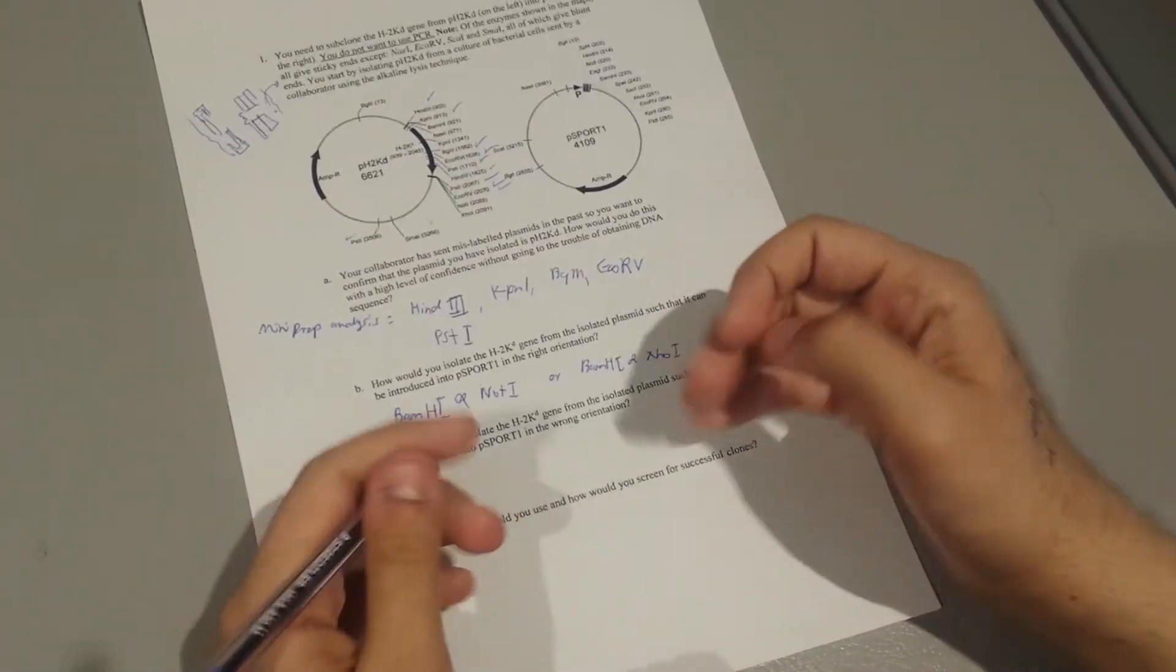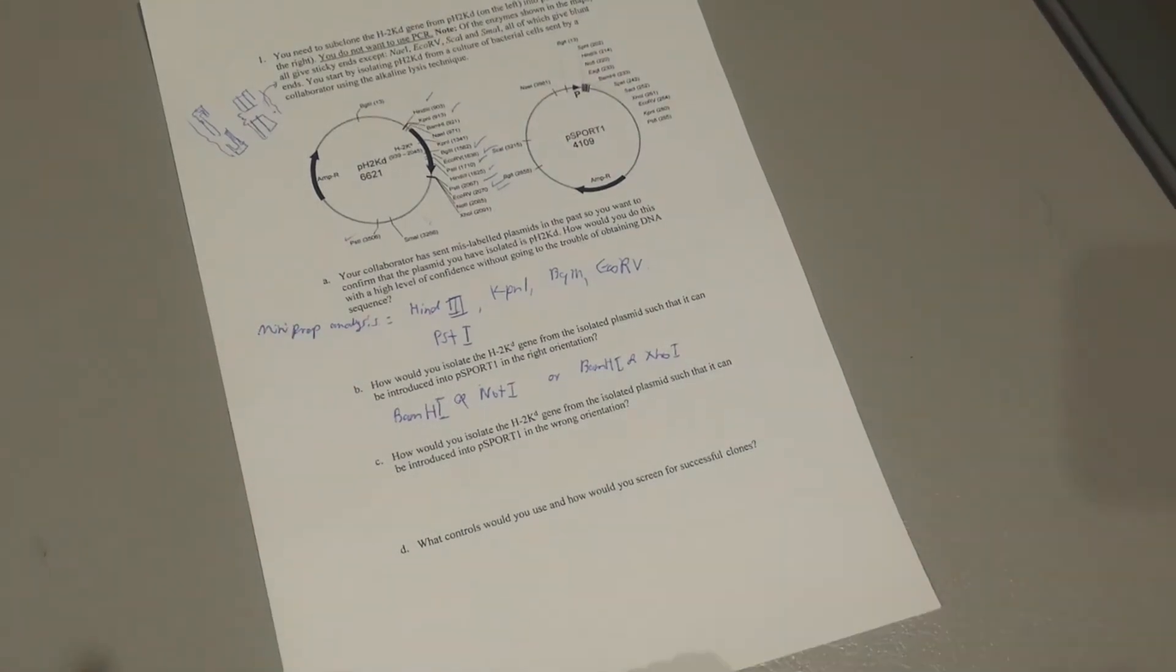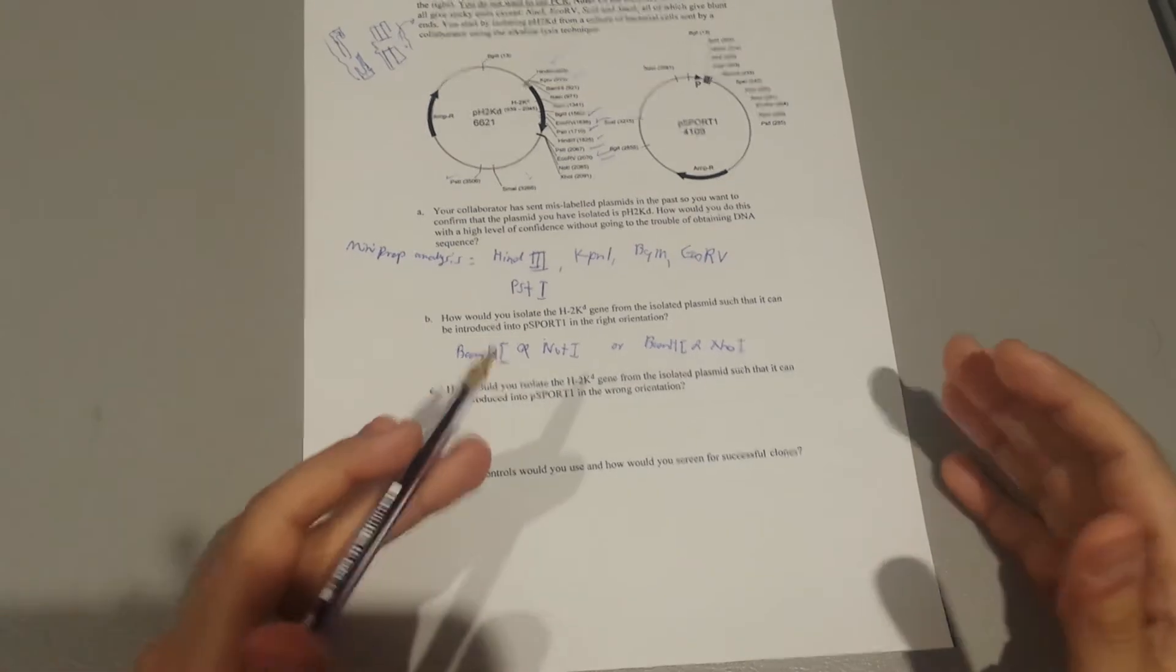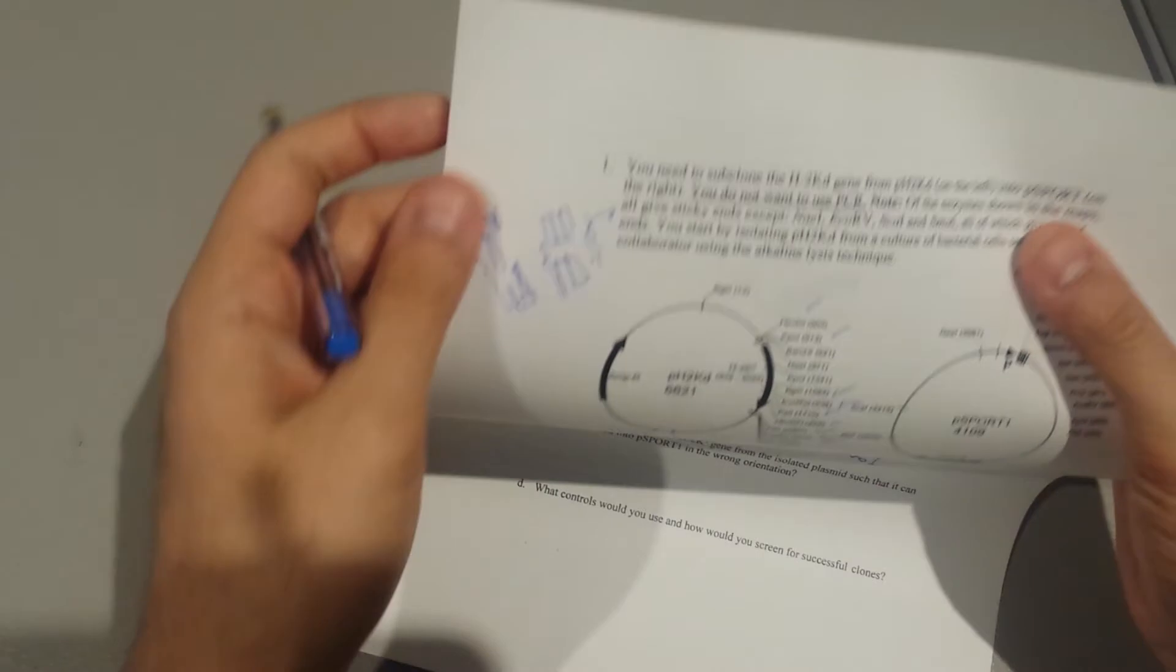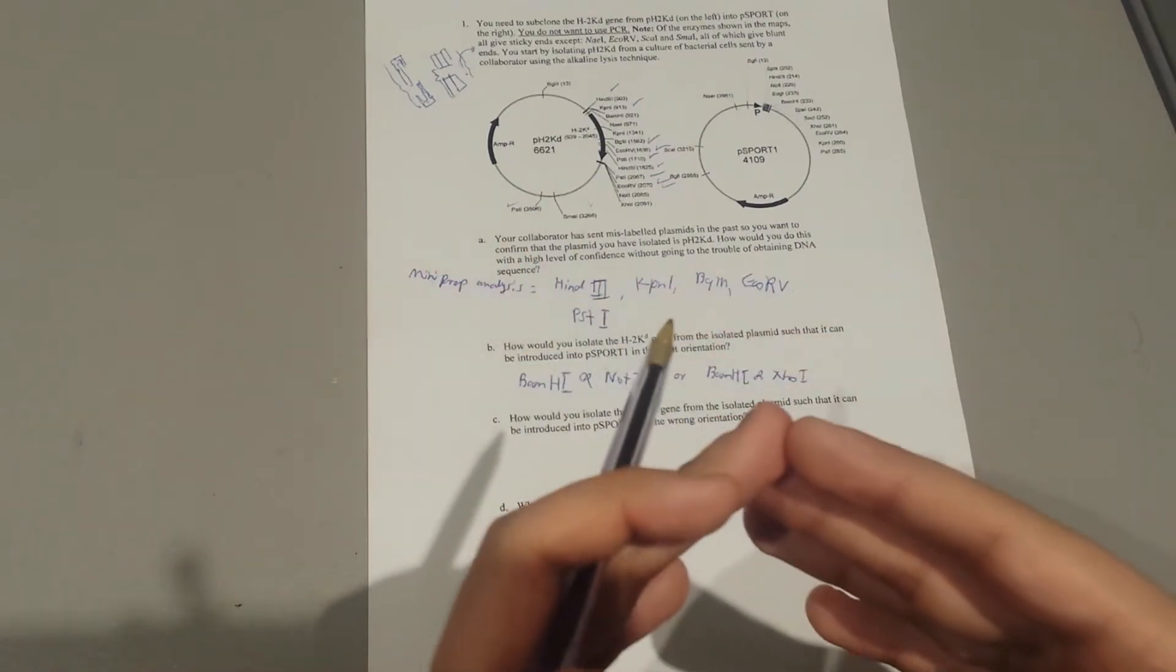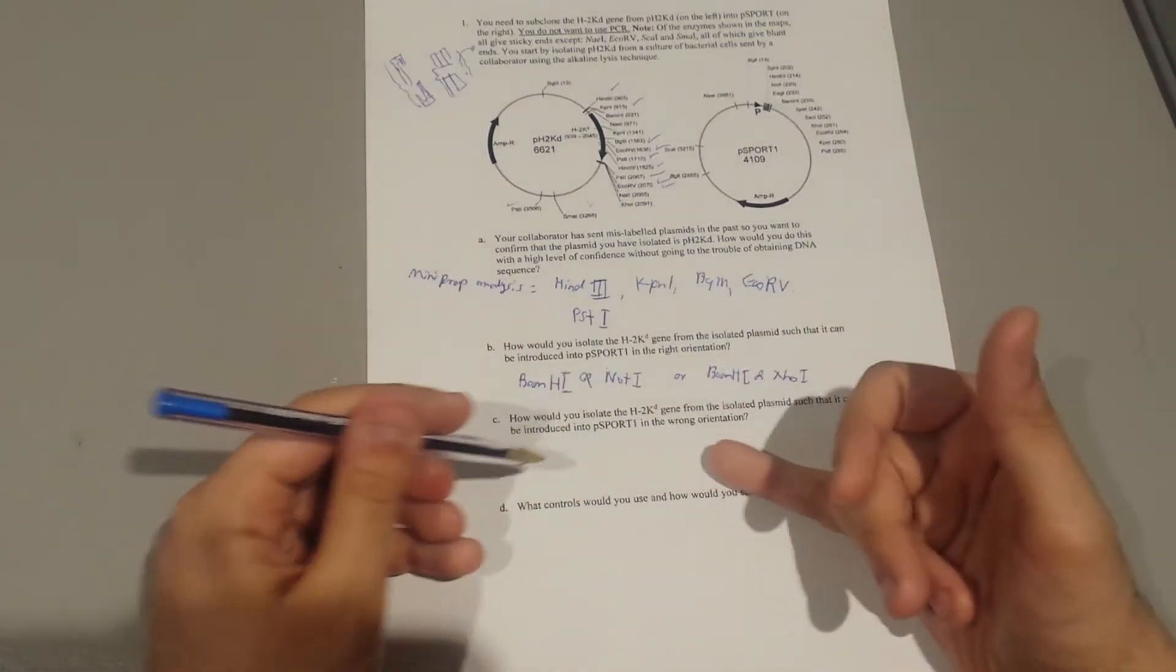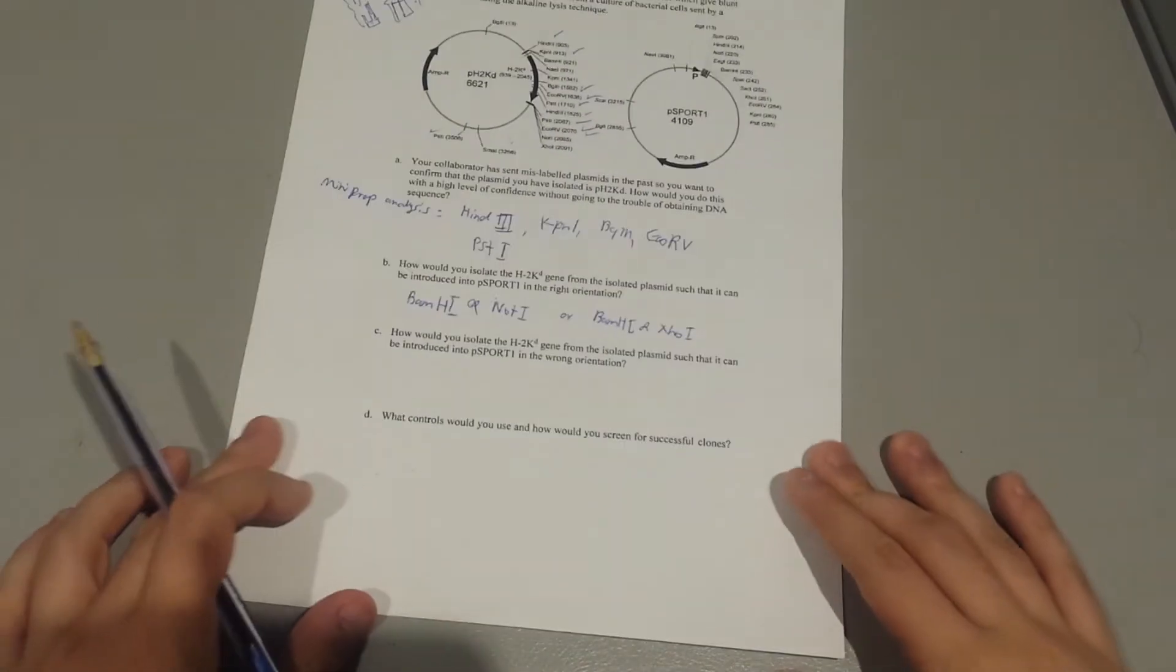Next question is asking you want to have a wrong orientation of that gene. That's kind of weird because you don't want to have wrong orientation, because you want full expression of that gene. But if you want to have wrong orientation, you need to have blunt ends.